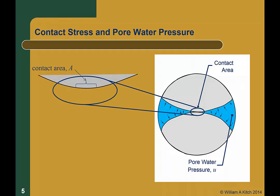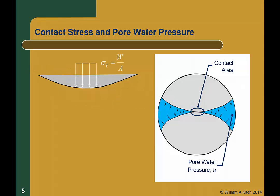Let's take a close look at the contact area between two soil particles. There will be some total normal stress, sigma T, being transmitted at the contact boundary. That stress will consist of the weight of the material from the tributary area above this contact point, W, divided by the contact area, A. The pore water pressure, U, acts normal to the particle surface in opposition to this total stress. The rest of the total stress is transferred across the particle boundary as inner particle stress, sigma C. So sigma C is that stress carried by the soil skeleton through inner particle contact.